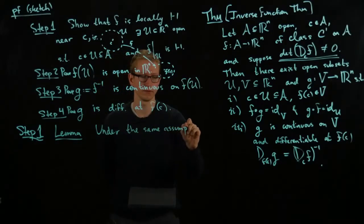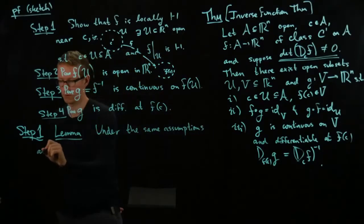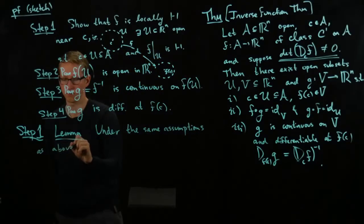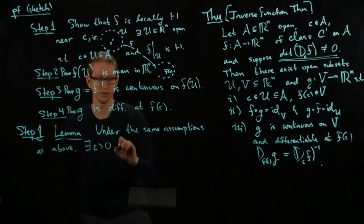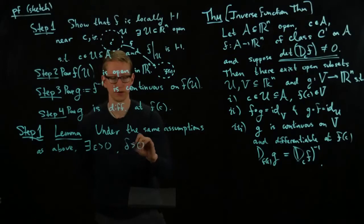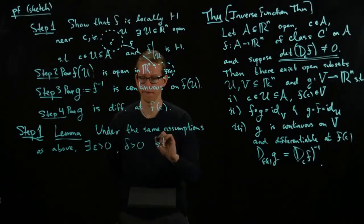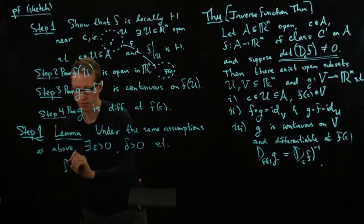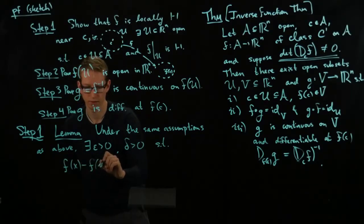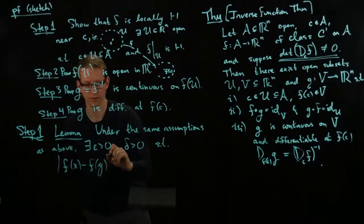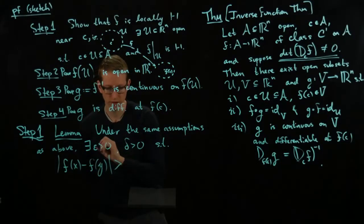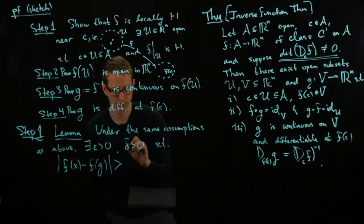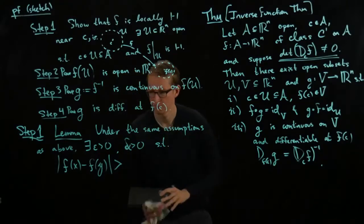greater than 0 and a delta greater than 0 such that the difference of the values of these two functions at all points are greater than, and I shouldn't use the word, the letter delta. I should call this alpha instead. So, let's call that alpha